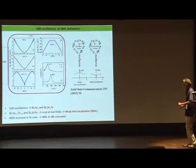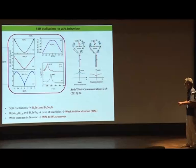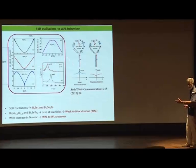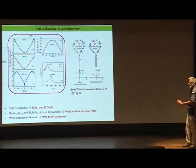The key point is that there are very dramatic differences in the magneto resistance behavior, and these can be understood in terms of a Shubnikov–de Haas oscillation changing over to weak anti-localization.